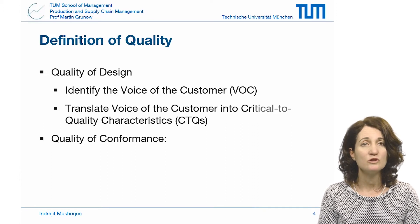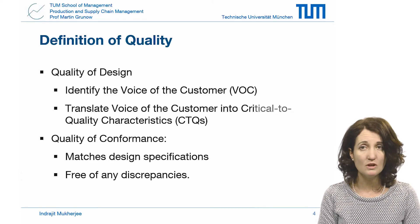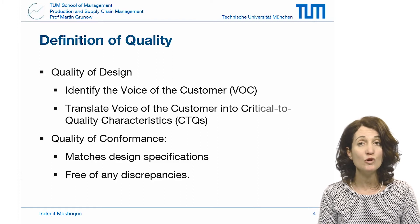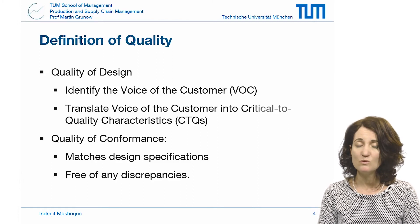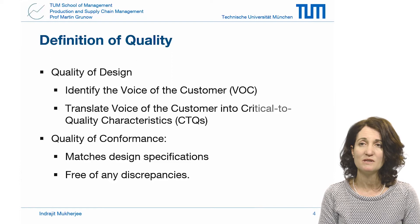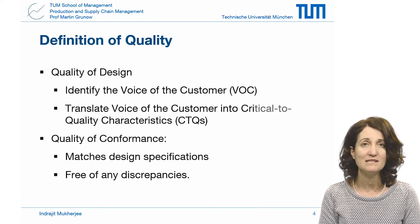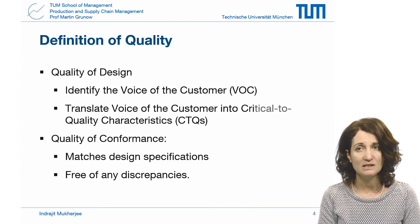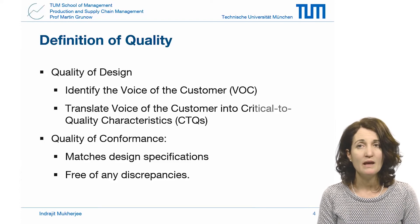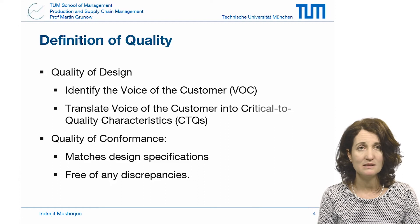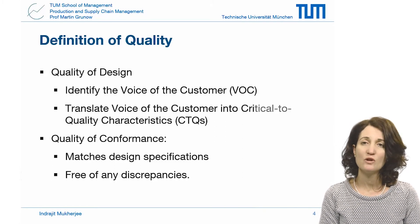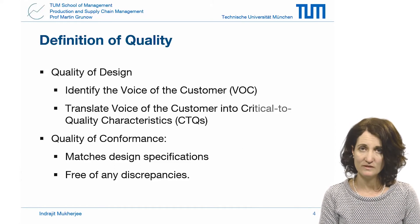Now, in order to assure conformance quality, we need to ensure that the outcome, or the performance, is what is specified by the design specifications for these CTQ parameters. Here we will use statistical techniques to control and to optimize our CTQ parameters. In this section, we're going to focus on the quality of design and the voice of the customer.